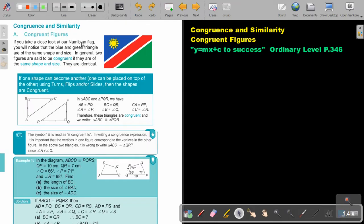If you take a close look at our Namibian flag, you will notice that the blue and green triangle are of the same shape and size. In general, two figures are said to be congruent if they are of the same shape and size. They are identical. So if one shape can become another, one can be placed on top of the other using turns, flips, and or slides, then the shapes are congruent.